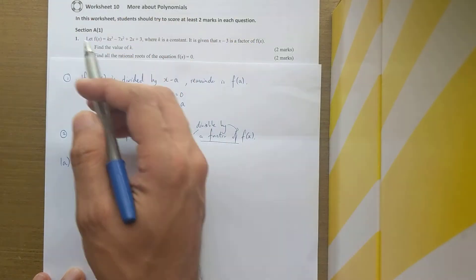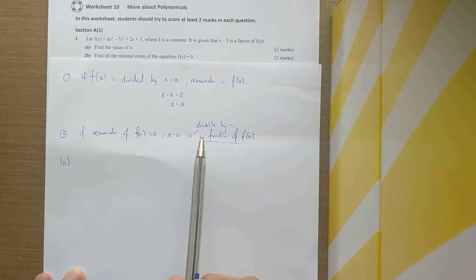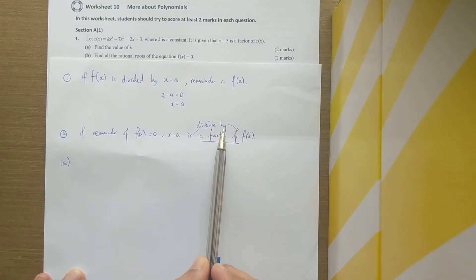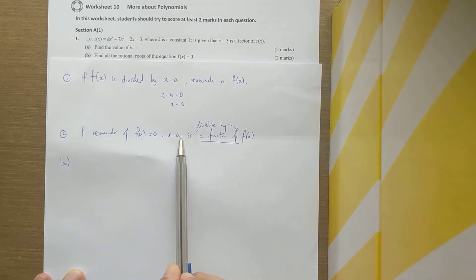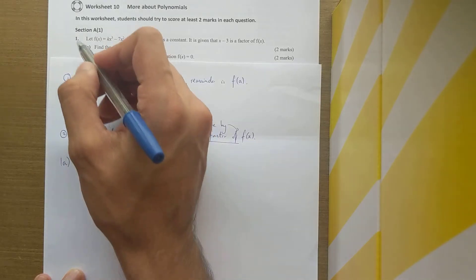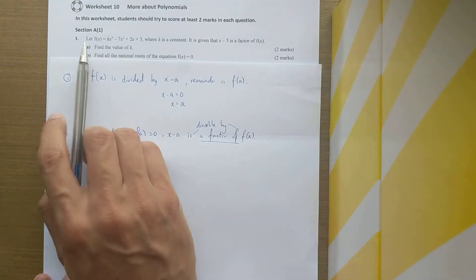Okay, so we will try to do the first question. Just a slight clarification: when you see the word divisible, it should be f(x) divisible by x minus a, so x minus a is a factor of f(x). That's the only clarification.